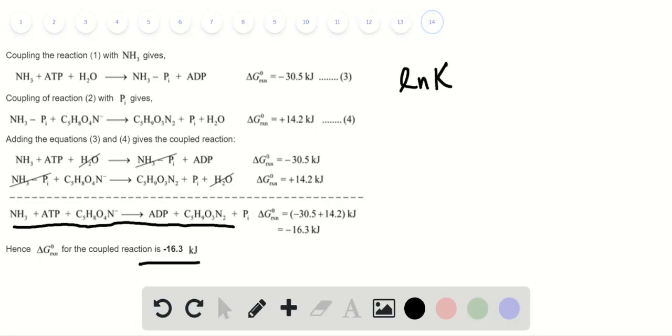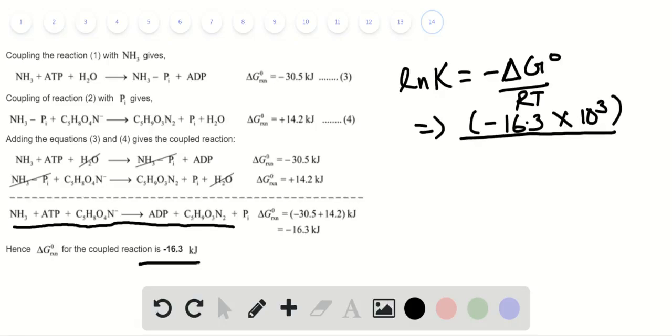As before, ln K = -ΔG/RT. Substituting the values: (-16.3 × 10³)/(8.314 × 298), the value of ln K is positive 6.58.